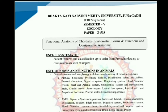Sub-phylum Hemichordates are divided into 2 main classes: Enteropneusta and Pterobranchia. Sub-phylum Urochordates are divided into 3 main classes: Ascidiacea, Thaliacea, and Larvacea. And the last sub-phylum, Cephalochordates, is divided into only 1 class: Leptocardia. Then Group No. 1, Craniata, is divided into only 1 sub-phylum: Vertebrata.